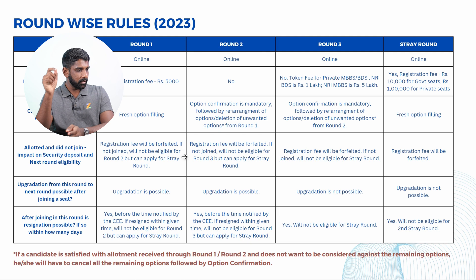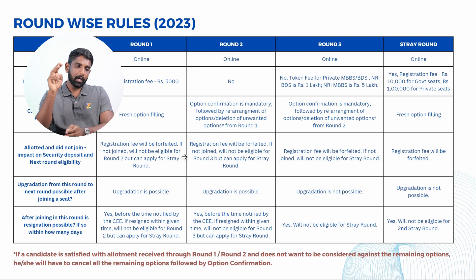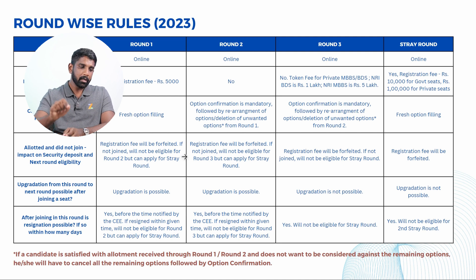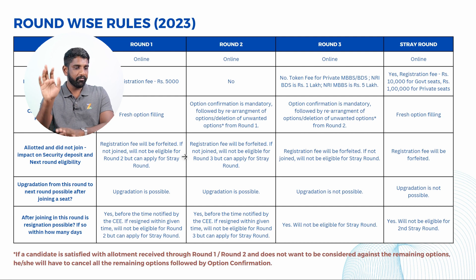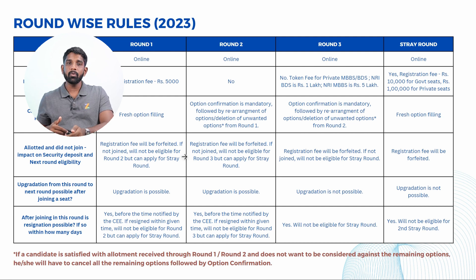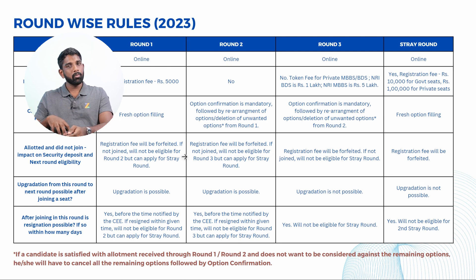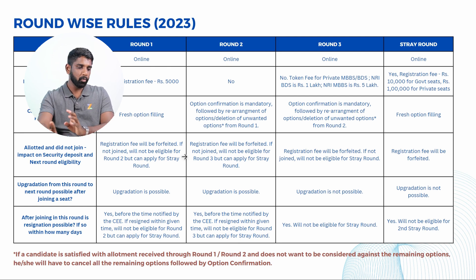In Round Three, just like Round Two, option confirmation is mandatory. You will be able to rearrange the options but will not be able to add fresh options. Whatever options are needed across Round One, Round Two, and Round Three must all be filled out in Round One itself.